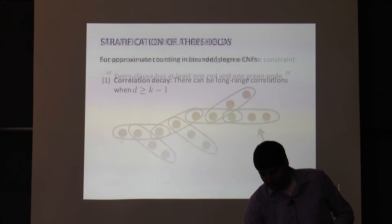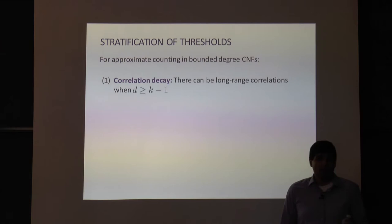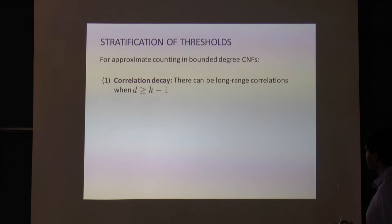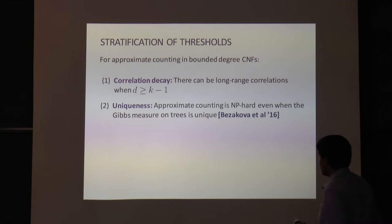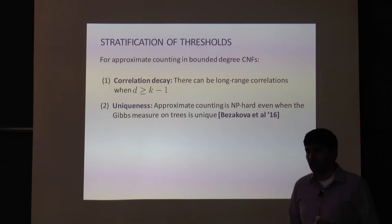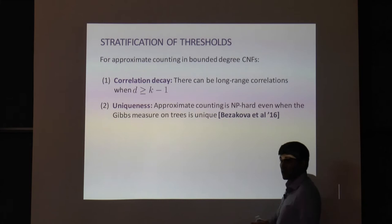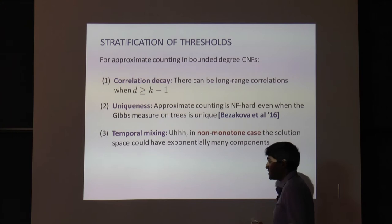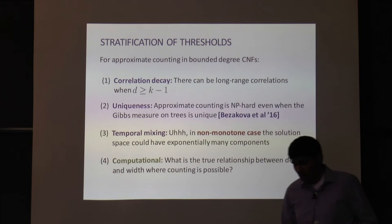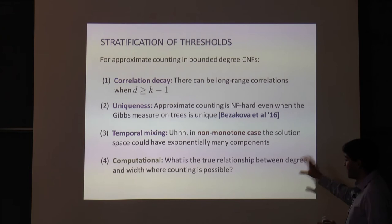This is what makes the problem complicated — the stratification of these thresholds. Correlation decay fails when d ≥ k-1. Uniqueness of the Gibbs measure fails, as shown by Bezáková, even when the problem is NP-hard: at d ≈ 2^k, the Gibbs measure on trees is actually unique even though it's NP-hard to approximately count. Temporal mixing in the non-monotone case: it's unclear what a randomized algorithm even is. Computationally, we're still asking what the right threshold is.